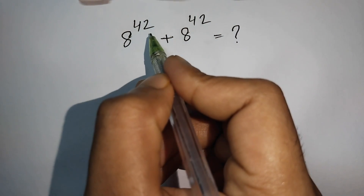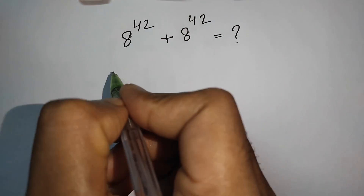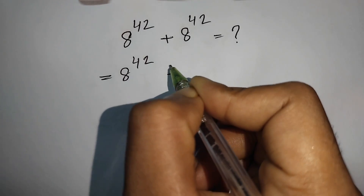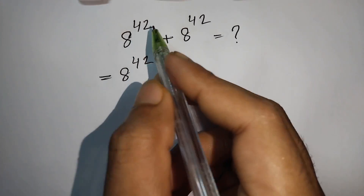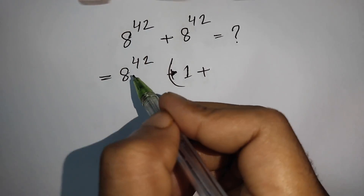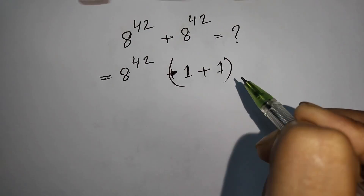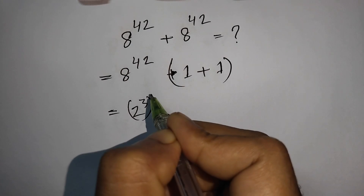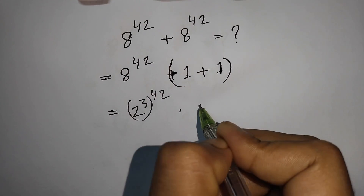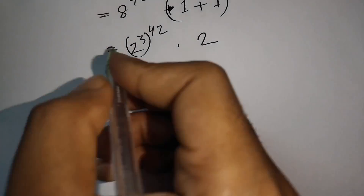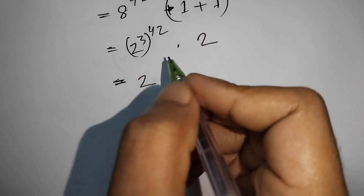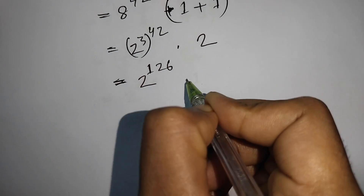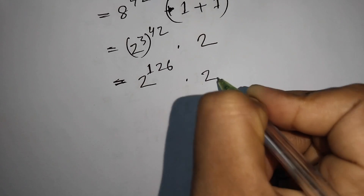New problem: How to simplify 8^42 + 8^42. First, factor out 8^42: 8^42(1 + 1) = 8^42 × 2. Since 8 = 2³, we write 8^42 = 2^(3×42) = 2^126. So the expression becomes 2^126 × 2 = 2^126 × 2^1.